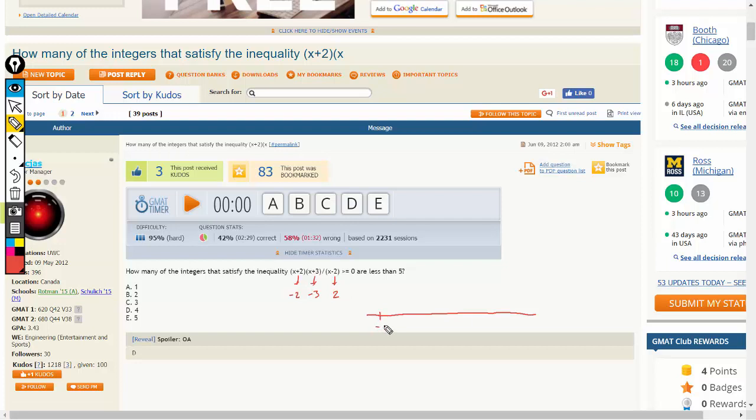So plot each of these terms on the number line: negative 3, negative 2, and positive 2.